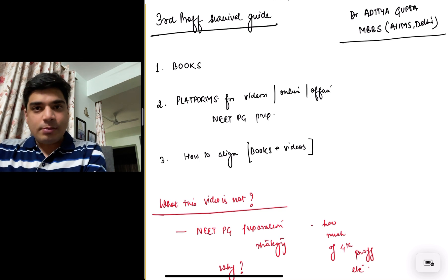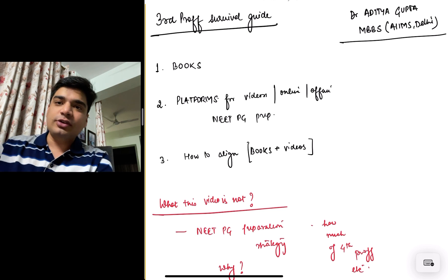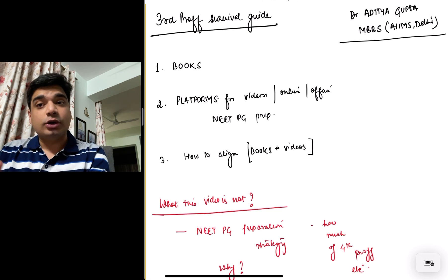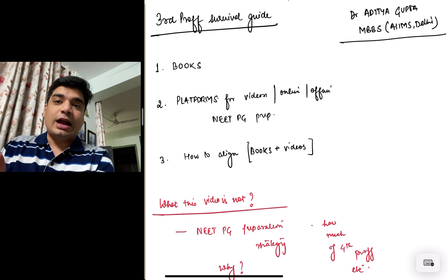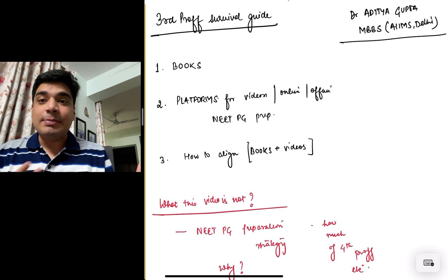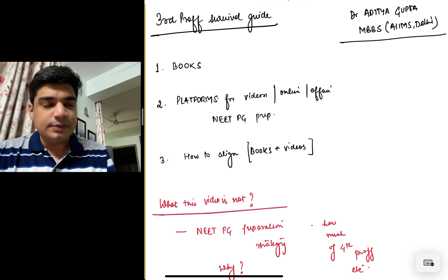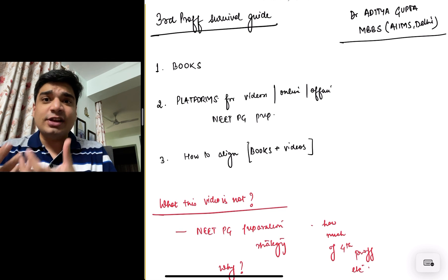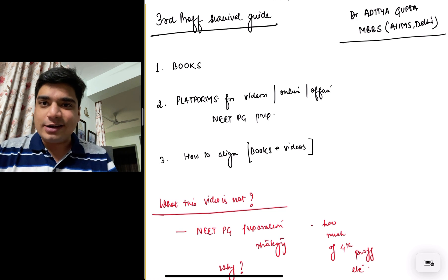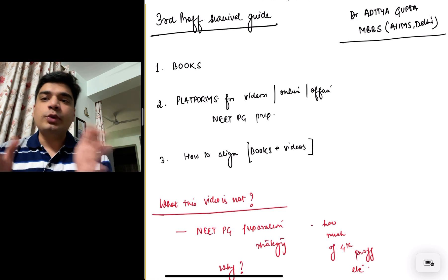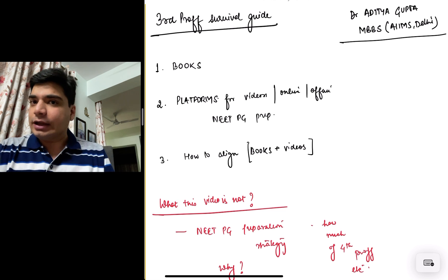I'm going to follow the same format that I used in all my videos. First, I'll talk about the books that are important. Second, I'll talk about what are, as far as online platforms are concerned, videos are concerned, which are good videos, which can serve as an adjunct to the all important standard textbooks. And third is how do we align these books and videos together?